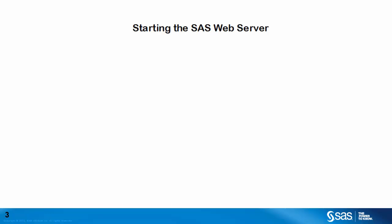We will begin by looking at what happens when we start the SAS web server. The SAS web server process can either be run on its own machine or on the same machine as the SAS web application server. In our diagrams here, to keep things clear, we will show this running on its own machine, but the same things will happen if it's running on the same machine as the SAS web application server.